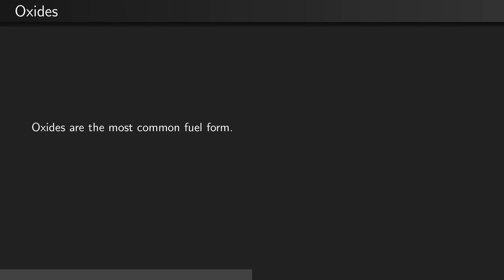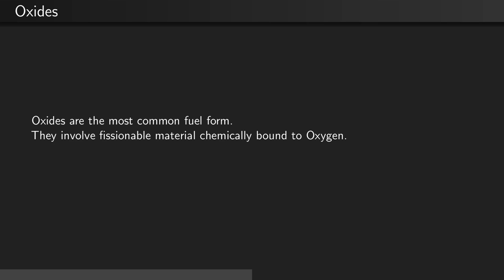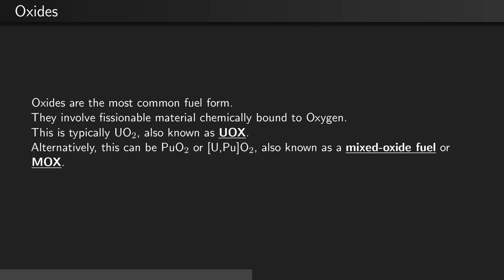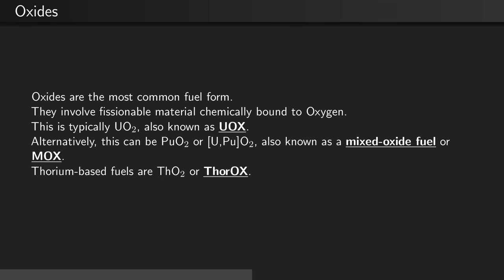Oxides are the most common fuel form. They involve fissionable material chemically bound to oxygen. This is typically uranium dioxide, also known as UO₂. Alternatively, this can be plutonium dioxide, or some mixture of UO₂ and PuO₂, also known as a mixed oxide fuel form, or MOX. Thorium-based fuels are thorium dioxide, or ThO₂.